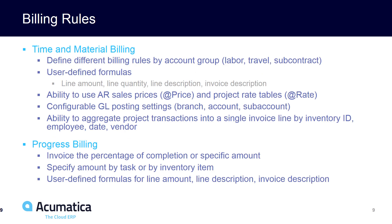There are two primary types of billing rules that have been introduced: time and materials, and progress billing. Time and materials simply takes inbound costs, re-rates them or assigns them a different price, and then allows you to create a simplified invoice in one step. Progress billing allows you to take a fixed project amount and bill it in increments as your project gets completed.